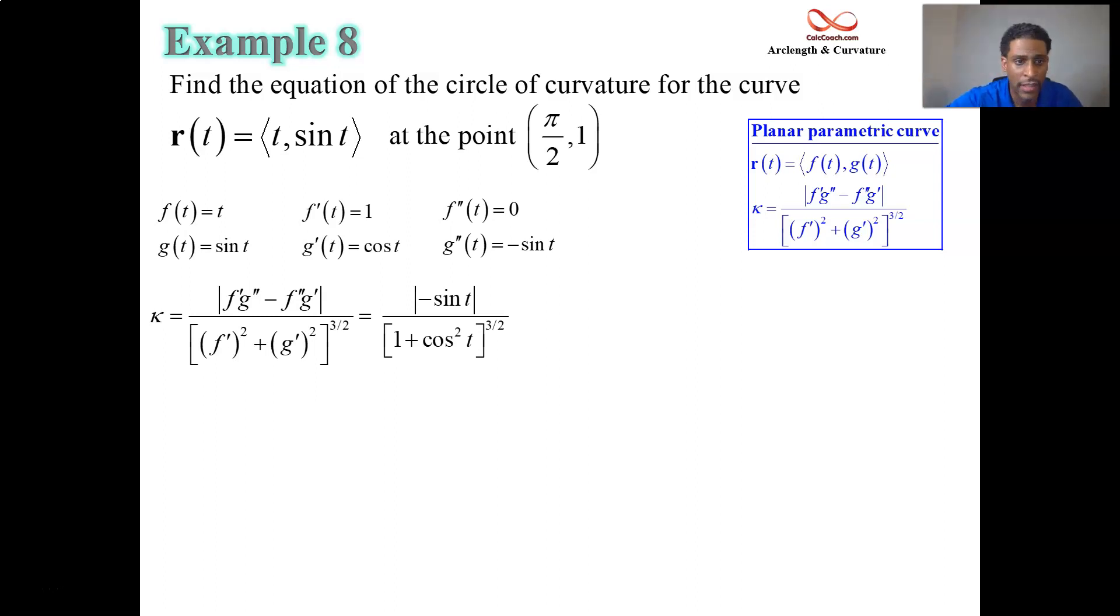So that's going to be then a sine of t, but negative, but inside absolute value bars. So it's just going to be sine of t. And then underneath, if you square the f prime, you get 1. If you square the g prime, you get cosine squared. And so that's the guy who's raised to the 3 halves power, the sum of those guys.